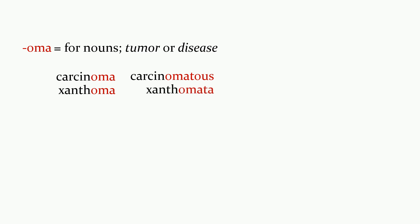Our next suffix is -oma, and this is used for nouns, often for tumors or diseases. We have carcinoma, xanthoma which is like a yellowing of the skin. Xanthos in Greek means blonde or yellow. We can make adjectives like we did with -ima earlier: carcinomatis and xanthomata is when we want to make a plural of the -oma. So one xanthoma is one yellowing of the skin, two xanthomata are two yellowing areas of the skin.